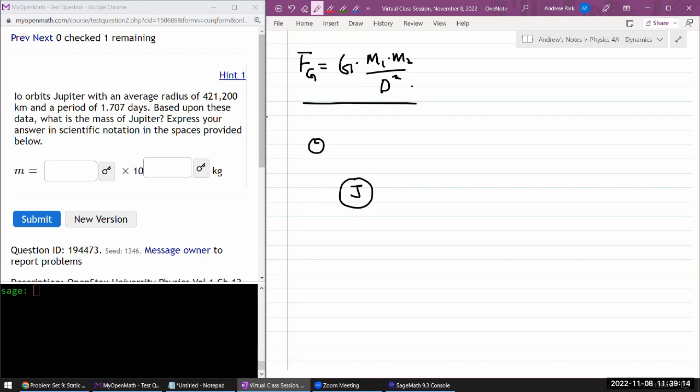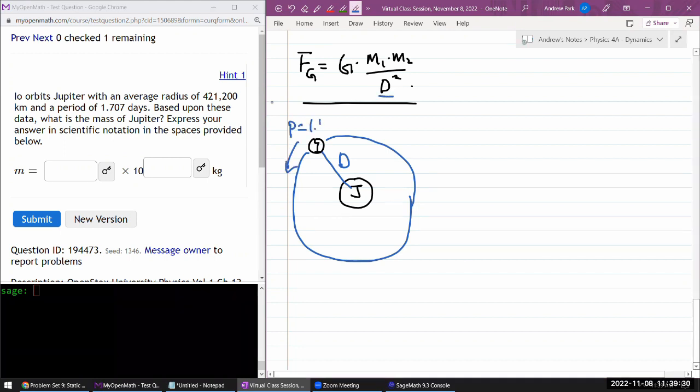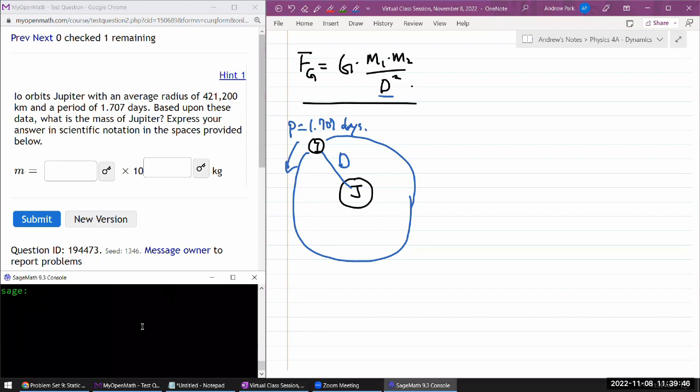And I have the moon Io that's orbiting Jupiter in some number of days. And the question is giving us the radius of the orbit, d. And a period of 1.707 days. Let's see here. So it's asking, based upon this data, what is the mass of Jupiter? Okay.